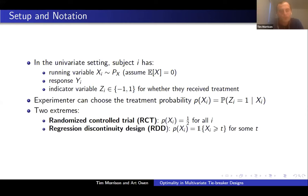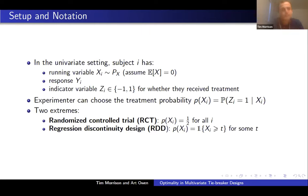We define two terms. A randomized control trial, or RCT, is where p of x equals one-half for all subjects — we don't even look at the covariate. And a regression discontinuity design, or RDD, is where p of x equals 1 if the running variable is above some threshold T, and 0 if it's below the threshold T. Intuitively, an RCT is probably better for the efficiency criterion, whereas an RDD is probably better for the gain criterion, at least if high values of the running variable are associated with high values of the outcome.